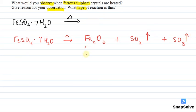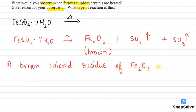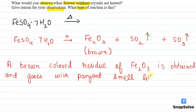So what will be the observation in this reaction? Fe2O3 has a brown color, so a brown colored residue of Fe2O3 is obtained. And gases with pungent smell, like that of burning sulfur, will be liberated.